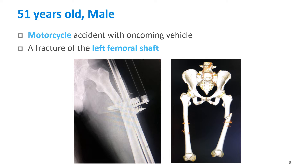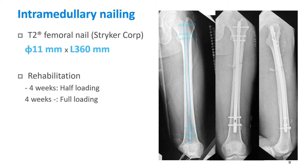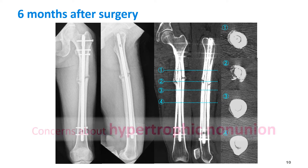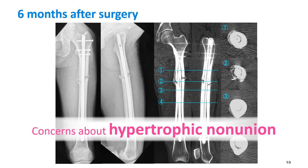The patient, a 51-year-old male, was injured when he collided with an oncoming vehicle while riding a motorcycle, and a left femoral shaft fracture was found. A Stryker T2 femoral nail, 11 mm in diameter and 360 mm in length, was used. However, at 6 months after surgery, there was concern about the possibility of hypertrophic non-union.